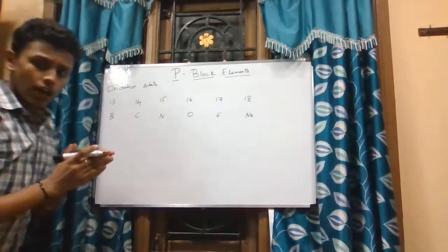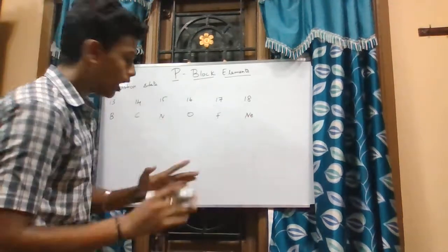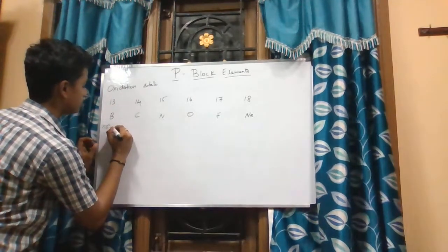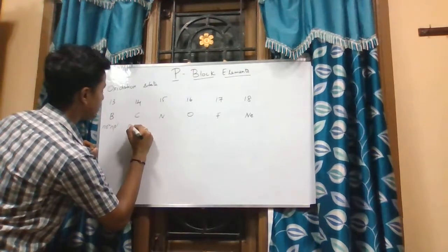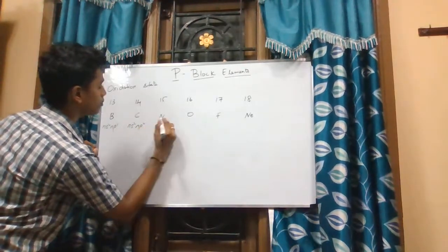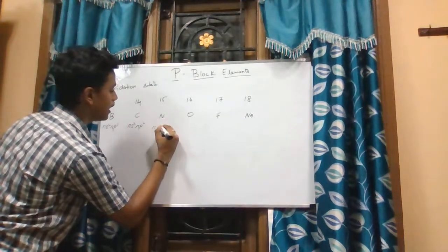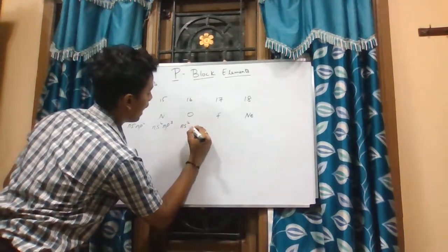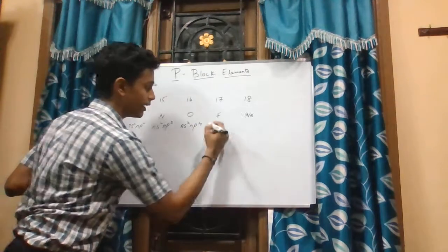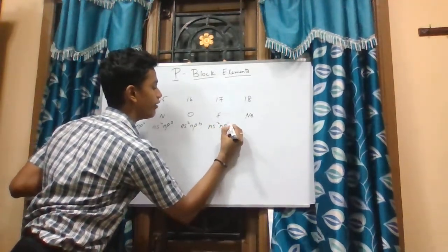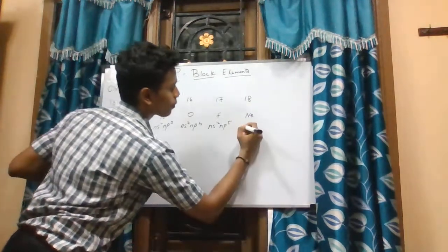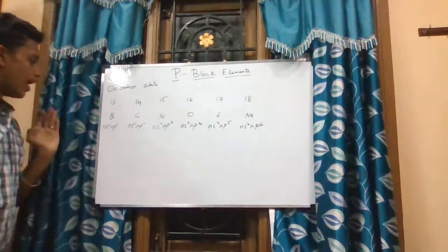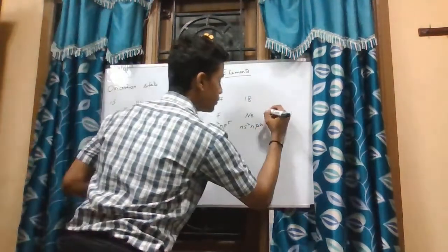The general electronic configurations are: group 13 — ns² np¹; group 14 — ns² np²; group 15 — ns² np³; group 17 — ns² np⁵; and group 18 — ns² np⁶, where n is the principal quantum number.